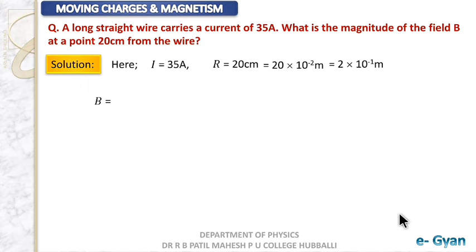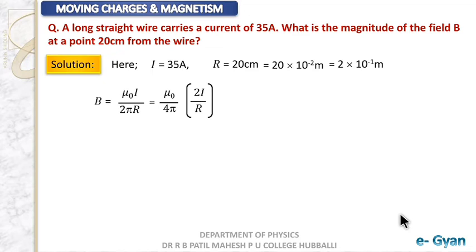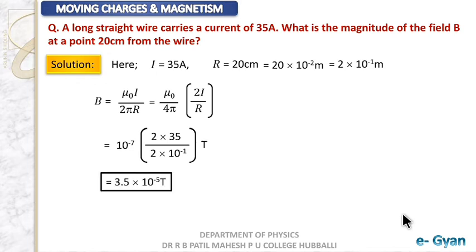The formula is B equals μ₀I divided by 2πr. We rearrange it as μ₀/4π multiplied by 2I/r, so that μ₀/4π = 10⁻⁷ can be directly substituted. Substituting: 10⁻⁷ × 2 × 35 divided by r = 2 × 10⁻¹. Simplifying these values, the magnetic field comes out to be 3.5 × 10⁻⁵ tesla.